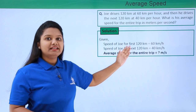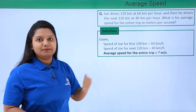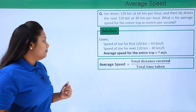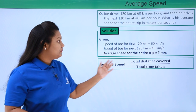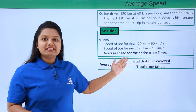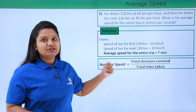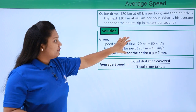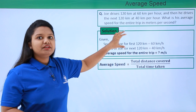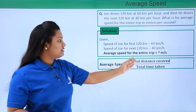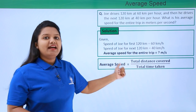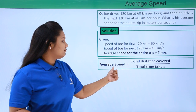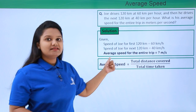We need to find the average speed for the entire trip. We know that the formula for average speed is total distance covered divided by total time taken. From the given information, we need to figure out these two things and substitute them into this equation to get the answer.